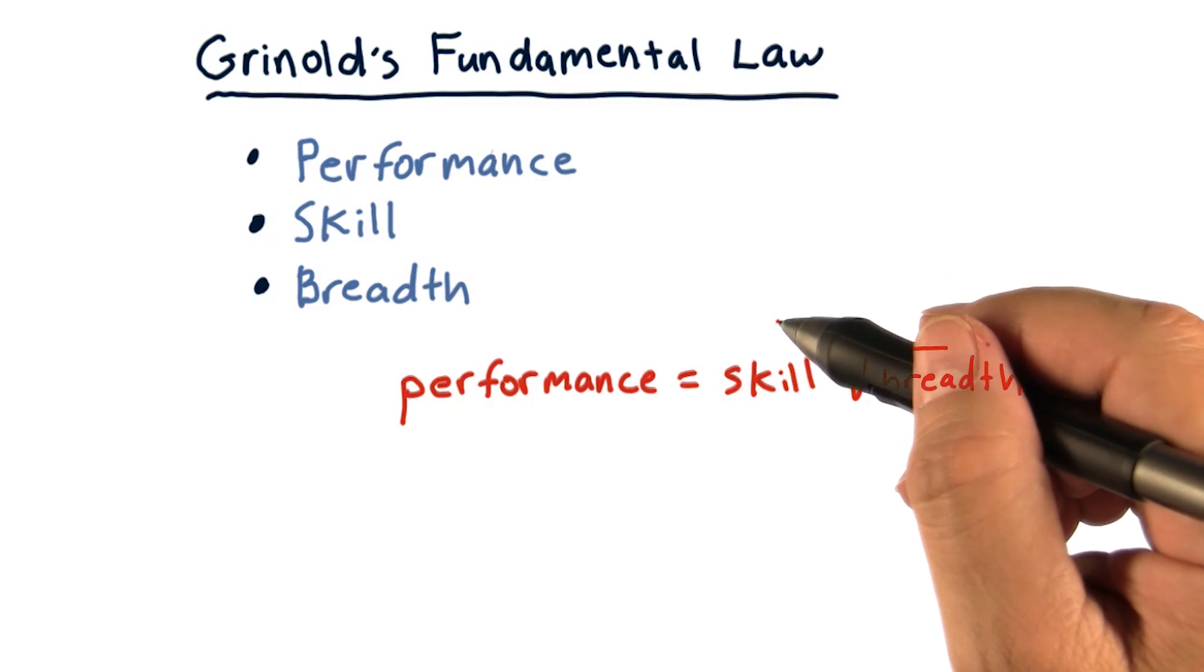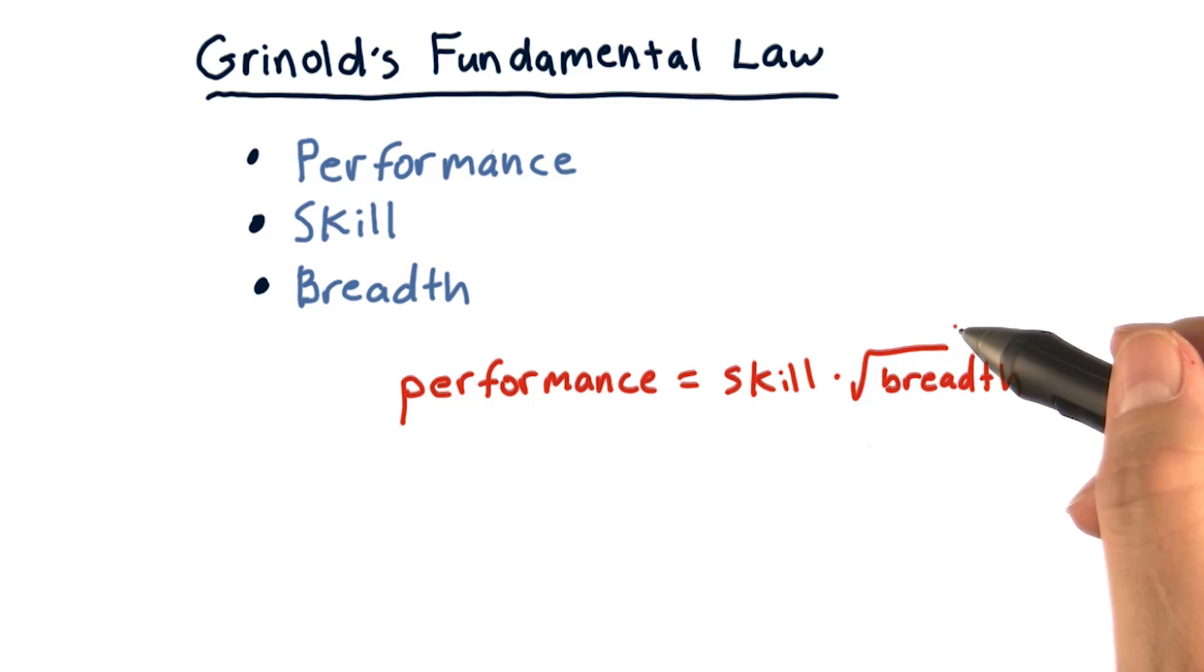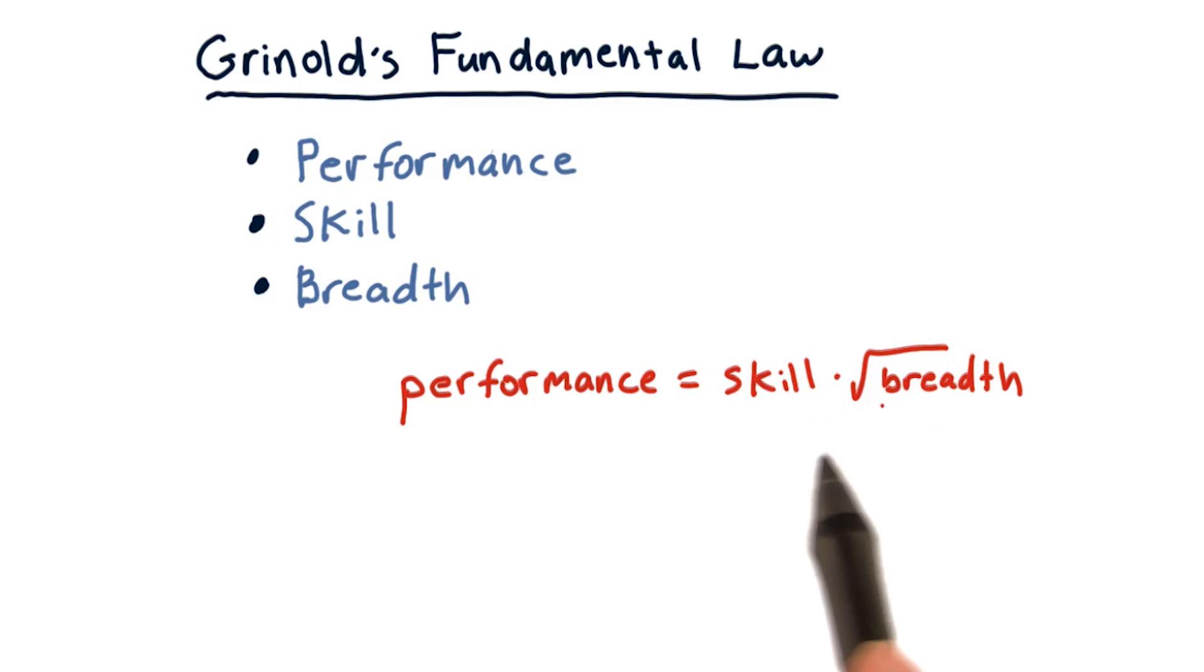So we need some measure of skill and some measure of breadth. If you want to improve your performance, you can improve skill, or you can find more applications, methods, or opportunities for applying that skill.